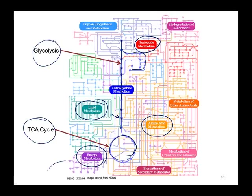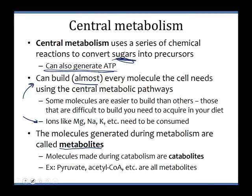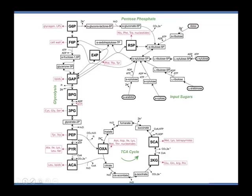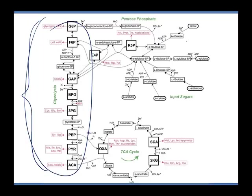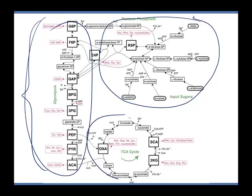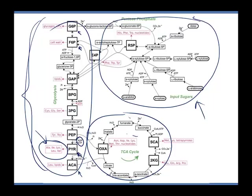Looking at a detailed metabolic map: here is glycolysis, the buildup and breakdown of nucleotides, and the TCA cycle. From pyruvate we can make lots of amino acids, and from the TCA cycle we can also make lots of amino acids. You don't have to know anything on here right now — this is just to emphasize that it's all linked together.